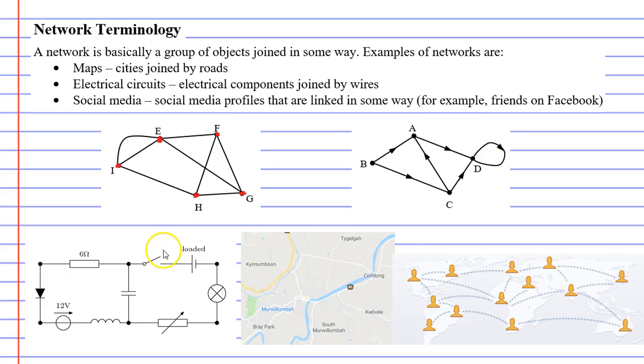The first one is called an electrical circuit. We can see it in the bottom left. You'll notice points connected together with lines.